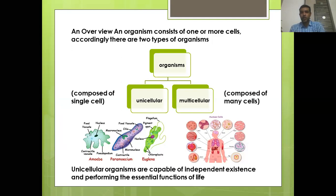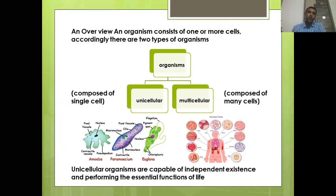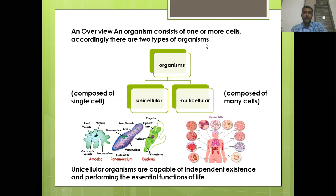Organisms consist of one or more cells, as you know. According to this, there are two types of organisms based on cell number. One is talking about single cells, the other is talking about more cells - one or more cells. So according to that, two types of organisms have been established.